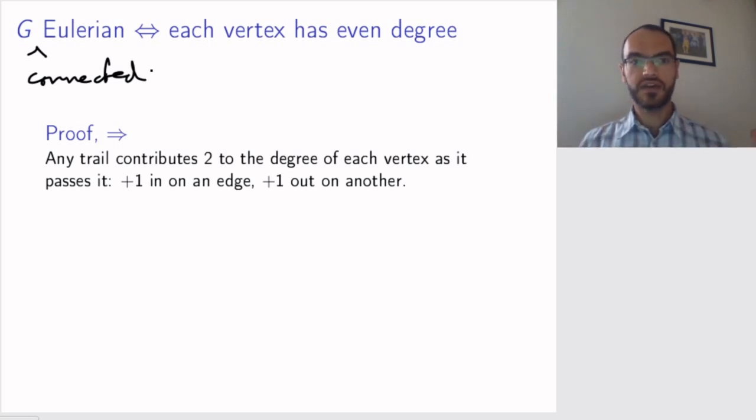So whenever you have a trail, the trail will contribute the number 2 to the degree of each vertex it passes. So if you have a trail that is a walk that doesn't repeat edges, at each vertex, the trail will come in one edge and go out a different edge. So that's plus 1 coming in and plus 1 coming out. It increases the degree of the vertex by 2.